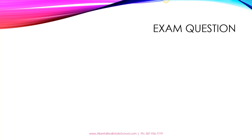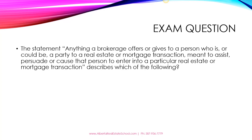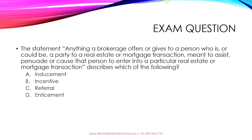What kind of question can you see on the exam regarding this? The question gives you the statement: 'Anything a brokerage offers or gives to a person who is or could be a party to a real estate or mortgage transaction, meant to assist, persuade or cause that person to enter into a particular real estate or mortgage transaction describes which of the following?' The options are: A) inducement, B) incentive, C) referral, or D) enticement. The correct answer is A — inducement.